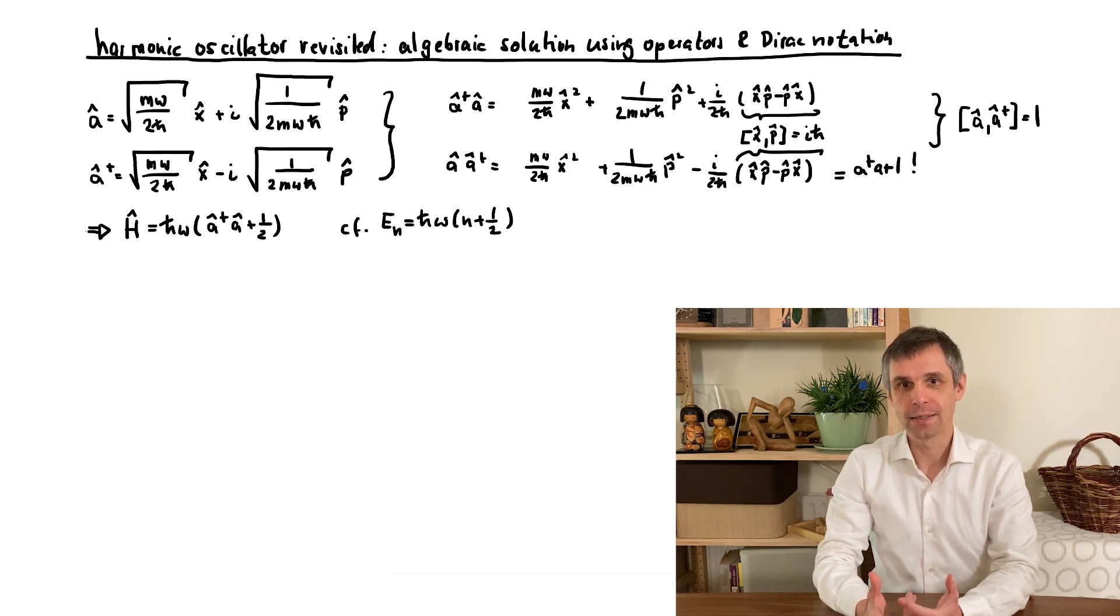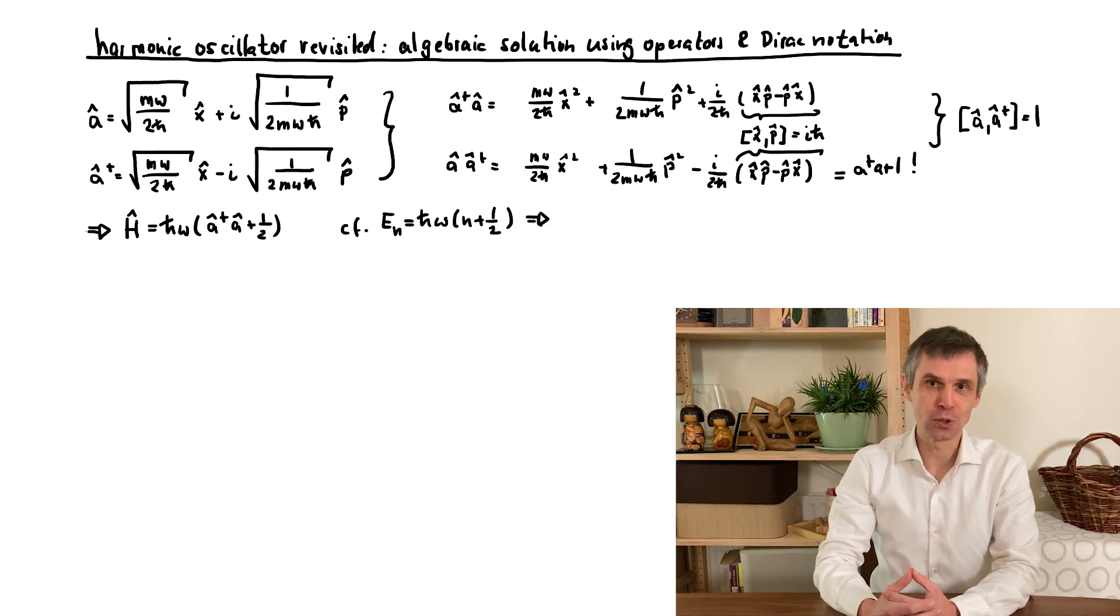So we anticipate that this has a set of eigenstates with eigenvalues n. As a matter of fact, these should just be the states that we determined by the other method. But we will show this here in a completely different way.